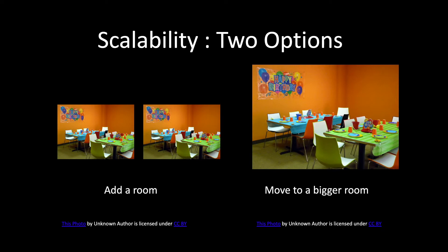When you provide one of these two options, your solution is scalable — there was an unexpected event where more people turned up, more requests came, and you were able to handle that. Adding a room is like horizontal scalability, and moving to a bigger room is like vertical scalability. We'll be covering these in future lectures.